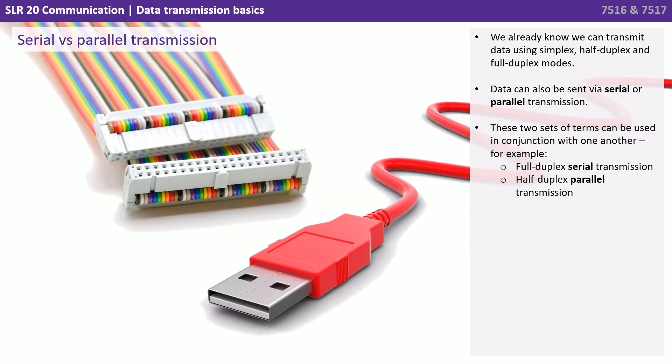So let's now have a look at serial versus parallel transmission. We already know we can transmit data using simplex, half duplex and full duplex modes. But data can also be sent via serial or parallel. These two sets of terms can be used in conjunction — for example we could have a full duplex serial transmission or a half duplex parallel transmission.